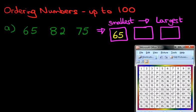Have a look at the number grid again. You've now got two numbers left, 82 and 75. Now, which row is the closest to the first row? Is it 75?